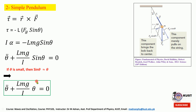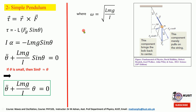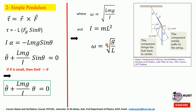With the small-angle approximation, the angular frequency is √(mgL/I), where I is the moment of inertia about the pivot. For a simple pendulum, I = mL², so substituting gives ω = √(g/L), which is the more familiar form. From this one can find the time period of the simple pendulum.